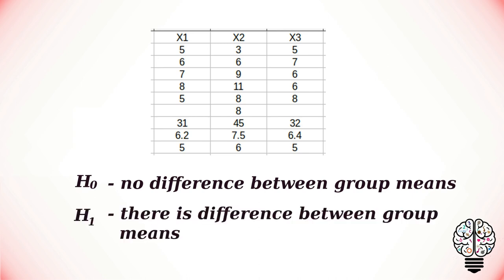So the null hypothesis here states that the mean of group one, group two, and group three must be the same, and our alternative hypothesis states that it at least has one difference among the means.